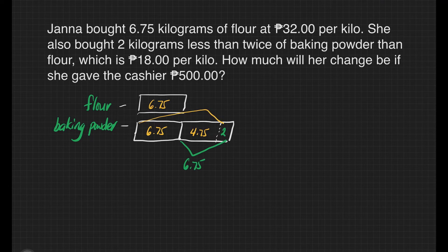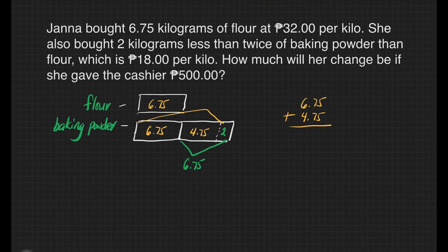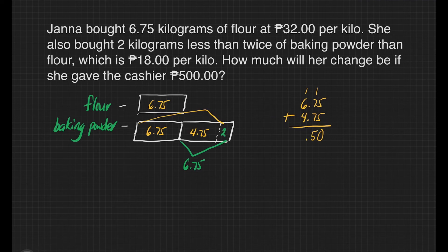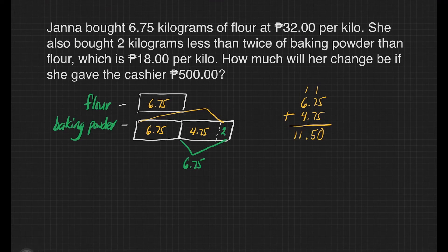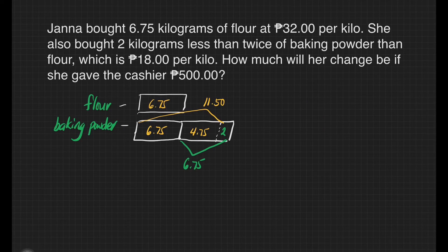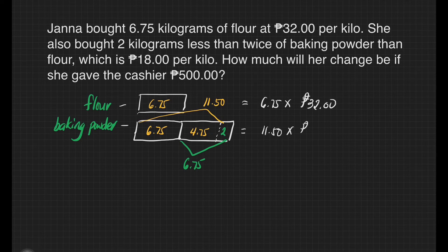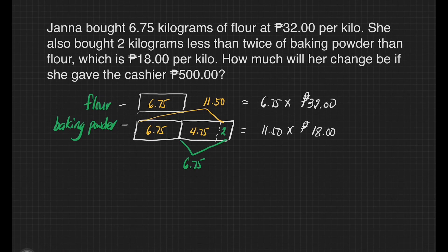We want to know how much baking powder Janna actually bought, so we add six and seventy-five hundredths and four and seventy-five hundredths. Five plus five is ten — write zero, carry one. Seven plus seven is fourteen plus one is fifteen — write five, carry one. Copy the decimal point. Six plus four is ten plus one is eleven. Janna bought eleven and fifty hundredths kilograms of baking powder. We still need to multiply six and seventy-five hundredths by 32 pesos, and eleven and fifty hundredths by 18 pesos, to get the total amount Janna spent.